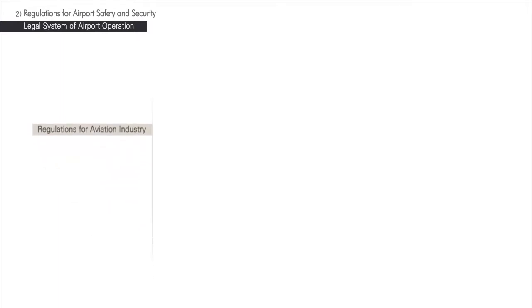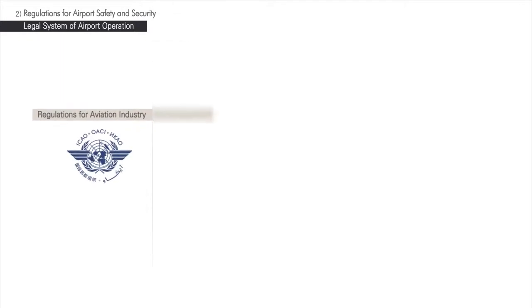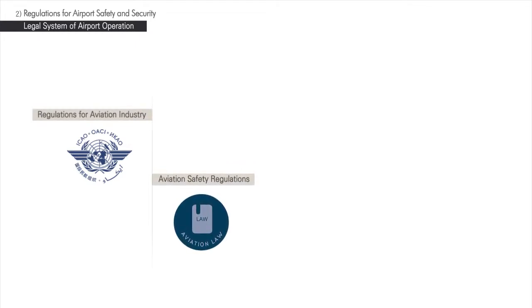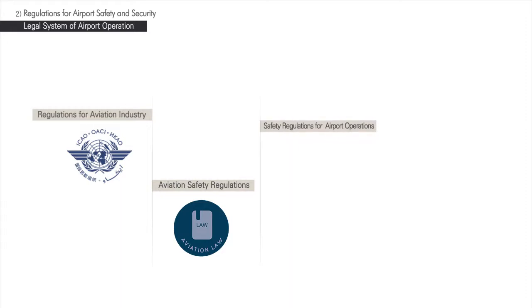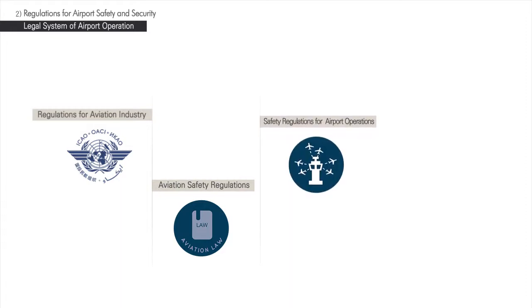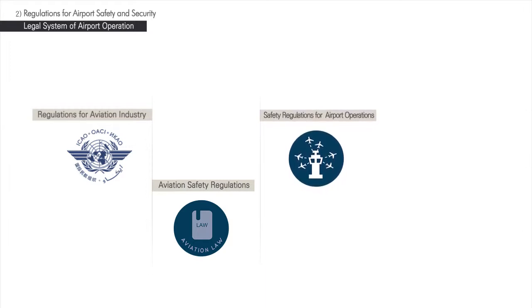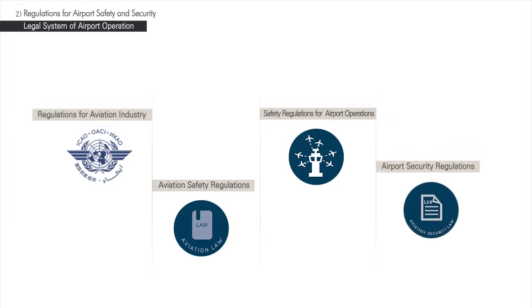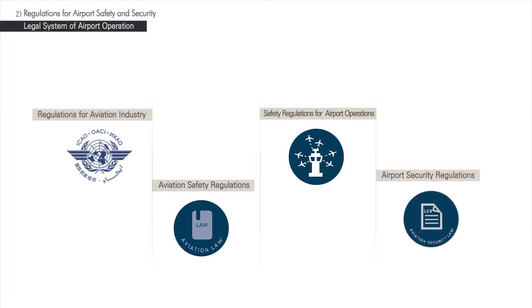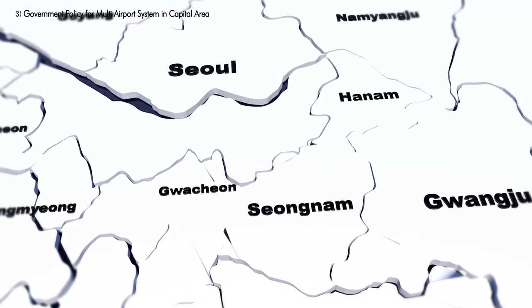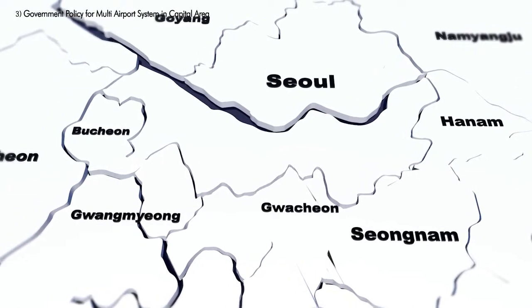Let's review the legal system related to airport operation in Korea. Regulations for the aviation industry in Korea have been established based on ICAO standards. Aviation safety regulations in Korea are composed of aviation law and its sub-regulations that carry operation details of the air transportation system. Safety regulations for airport operations are mainly focused on aircraft operation safety and air traffic control on and around the airport. Airport security regulations are based on the Aviation Security Law and its sub-regulations that carry details of security measures. Another issue is handling the policy aspects related to multiple airport systems in the capital area of Korea.